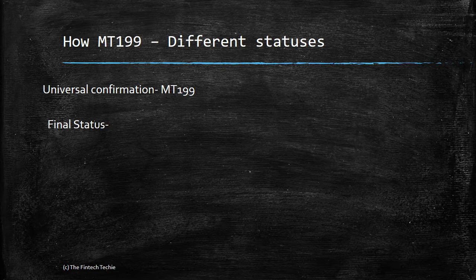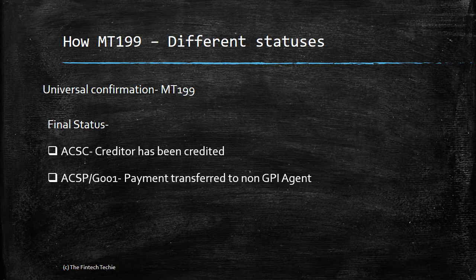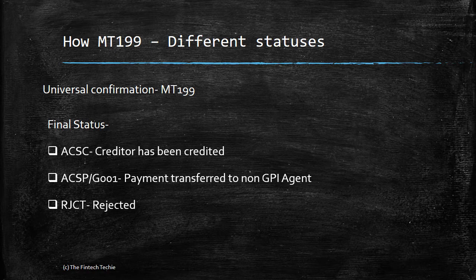Now let's look at the different statuses which are possible in field 79. Let's talk about the final statuses — that is, the status sent by the final bank in the payment chain. ACSC means the creditor has been credited — the final beneficiary has received the monies. The second one, ACSP/G001 — it's important to note the slash G001, because it means the payment has been transferred to a non-GPI agent who in turn will send it to the beneficiary, and this will be the final confirmation. Or it could be a reject, RJCT — the payment got rejected because either the beneficiary is not valid, the account does not exist or is closed, or it has failed due to a compliance check or anti-money laundering.